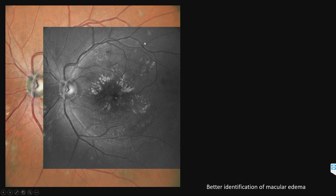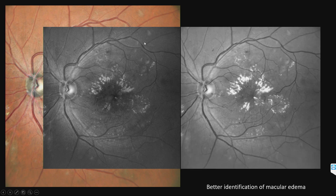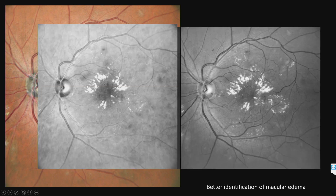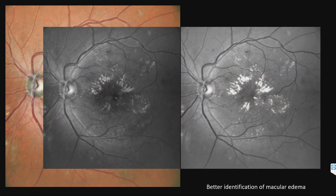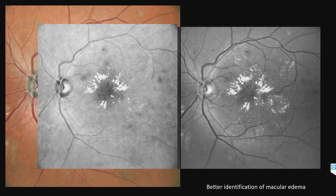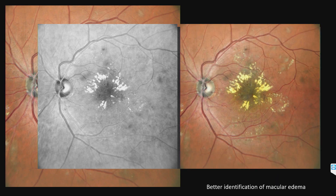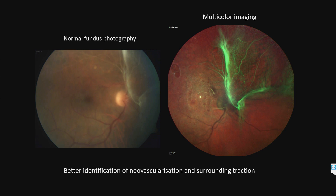The blue reflectance image shows areas of cotton wool spots very clearly. The hard exudates are seen with much more precision. Microaneurysms and hemorrhages are more clearly seen in the green reflectance image. The red reflectance imaging shows retinal pigment epithelial and choroidal details. In proliferative diabetic retinopathy, multicolor imaging gives better identification of new vascularization and surrounding traction.